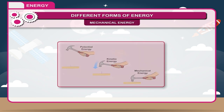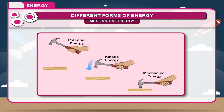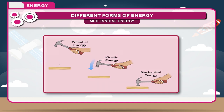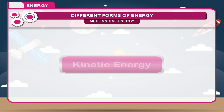The energy possessed by a body due to its state of rest or state of motion is called mechanical energy. Mechanical energy can be divided into two categories: kinetic energy and potential energy.